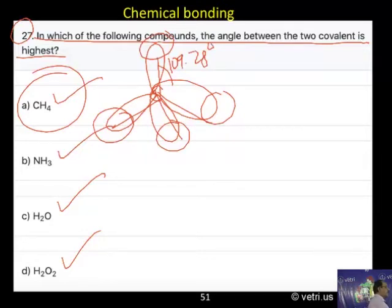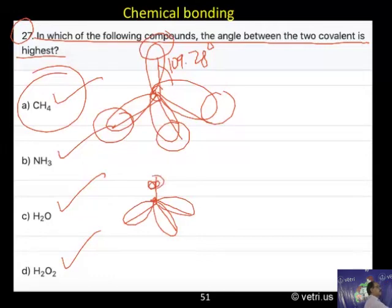there is the same tetrahedral structure, but it is in this form. So, here a lone pair. So, it is coming down at 107.